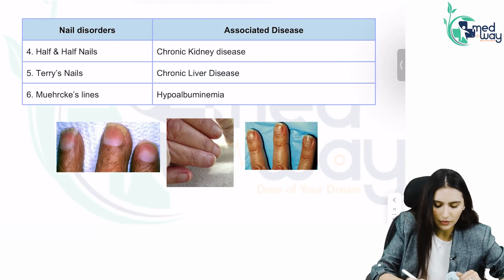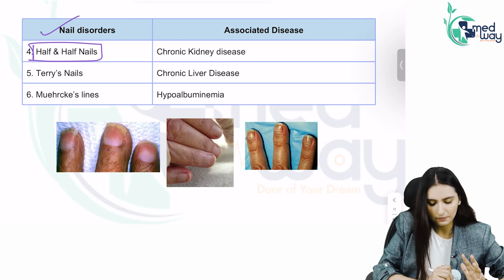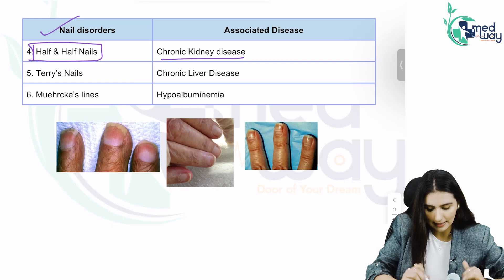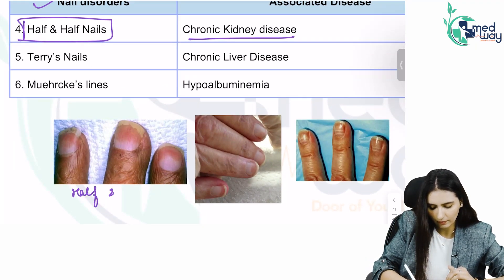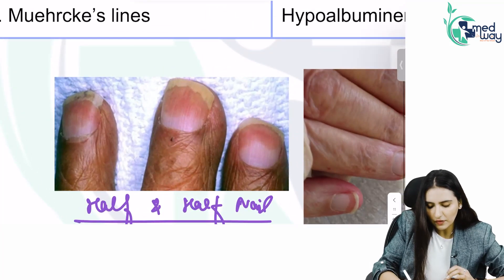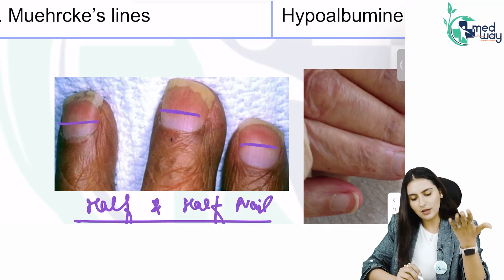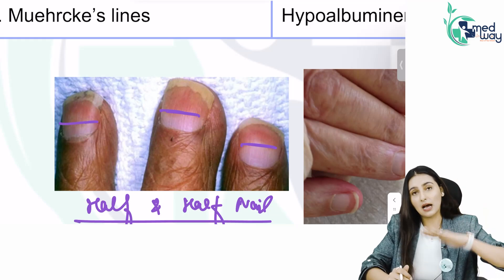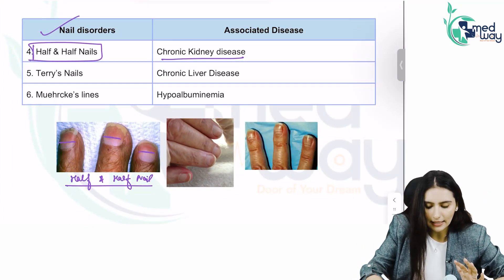Then you have half and half nails, which are seen in chronic kidney disease. If you look at the nail carefully, half part of the nail is red and half part of the nail is white — upper part is red and lower part is white. That is seen in chronic kidney disease.